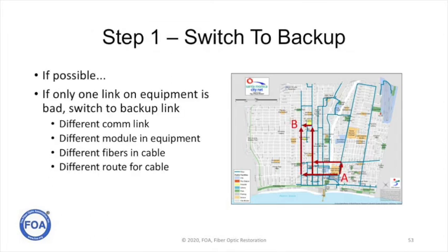Step one is obviously switch to backup, if possible. You did plan on backup as part of your planning process, didn't you? If you have only one link that's bad, switch to a backup link. Use a different communication link in the system, use a different module in the equipment, use different fibers and cable, use a different route for the cable — but switch to backup to get yourself back up and running so you have time to do the repair properly.